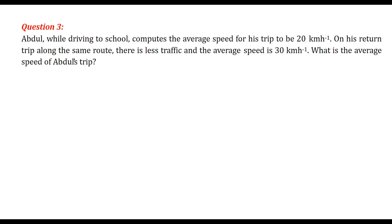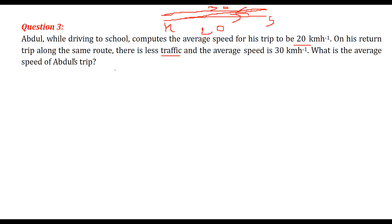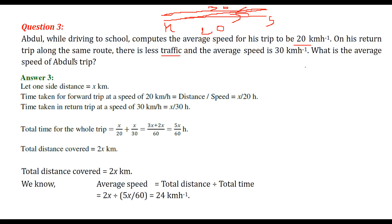Abdul while driving to school computes the average speed of his trip to be 20 km per hour. When he returns back, the traffic is less and the average speed becomes 30 km per hour. We know time equals distance divided by speed. Let the distance be x. So time T1 equals x by 20, and T2 equals x by 30.